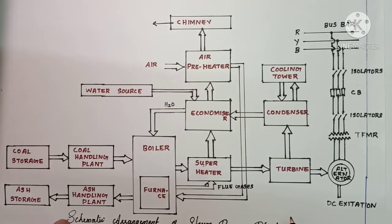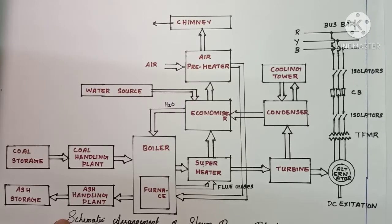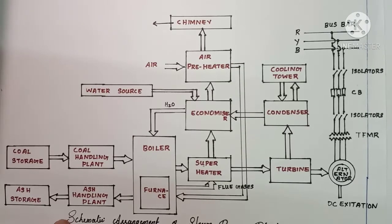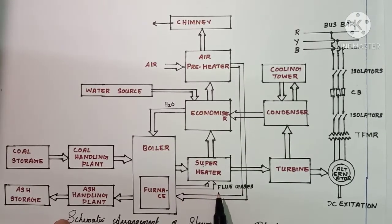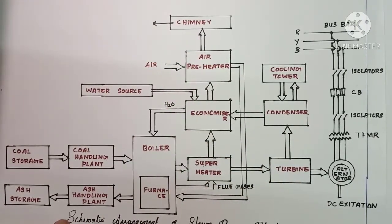The main advantage of a steam power plant is that the basic requirement — coal — is very cheap, the initial cost is relatively low compared to other generating stations, and it requires very little space. A key disadvantage is atmospheric pollution: combustion produces smoke and flue gases that are discharged through the chimney. Another disadvantage is that the running cost is very high.